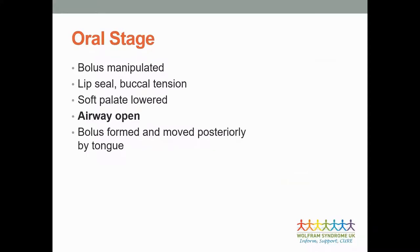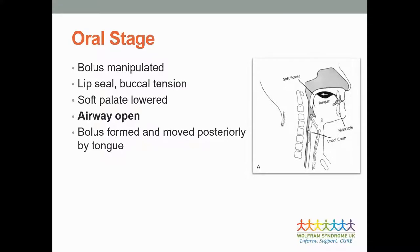The oral stage of swallowing covers everything that happens when food and drink is inside your mouth. We need a strong lip seal to stop anything falling out the front, and we use our tongue and other muscles to manipulate the food or drink to form a cohesive bolus and transfer it from the front of our mouth towards the back. Throughout this time our airway is open and our soft palate, or velum, is lowered.